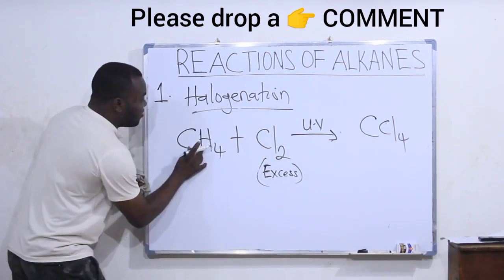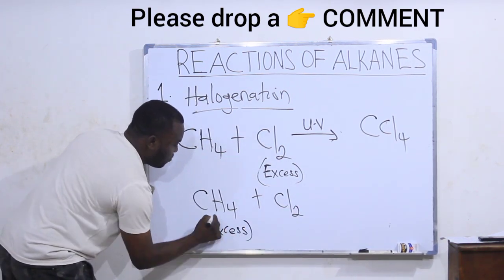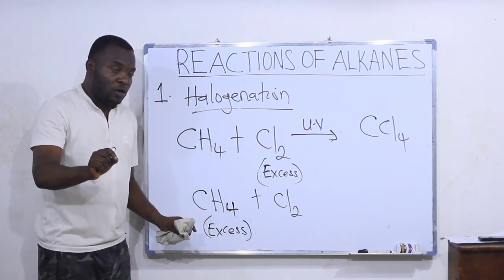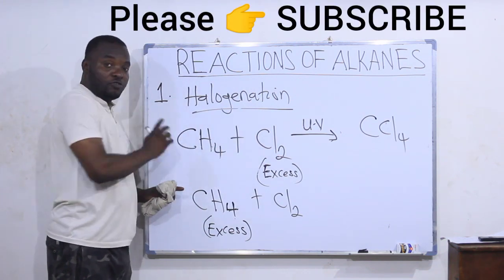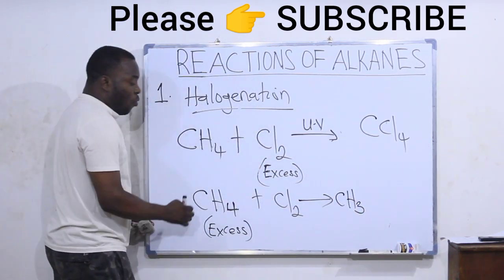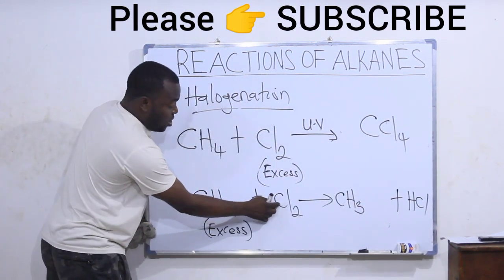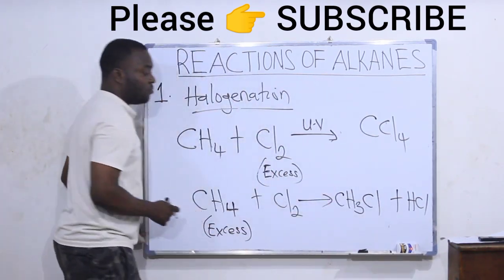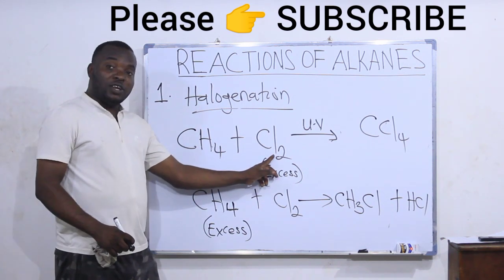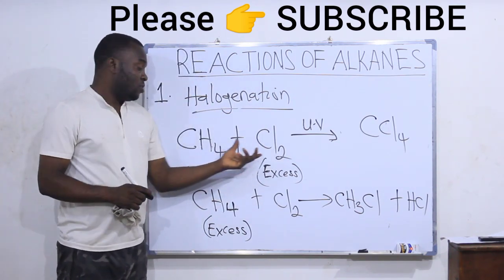But when the methane is the one in excess, not the halogen, only one of the hydrogens will be replaced. One H removed will combine with one chloride radical to give HCl, while the remaining chlorine radical replaces the position of that H, giving us CH₃Cl. So when the methane is in excess, we form chloromethane — only one chlorine. But when the chlorine is in excess, we form tetrachloromethane. That is the reaction between a halogen and methane.